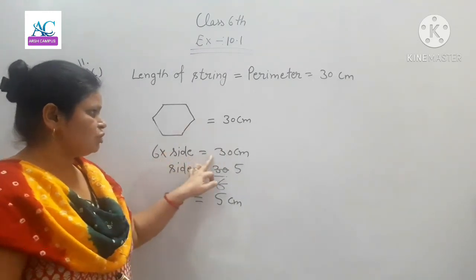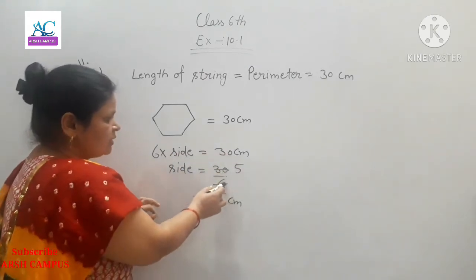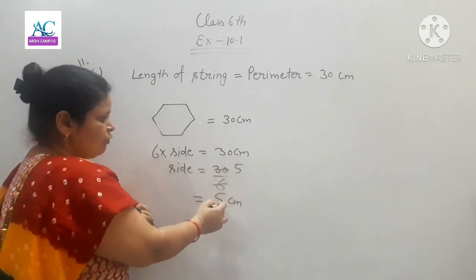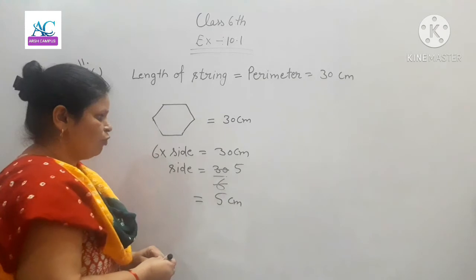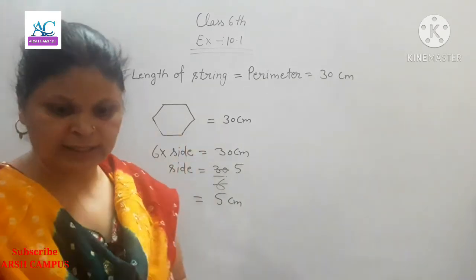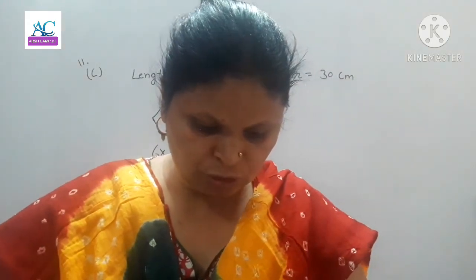6 × side = 30 centimeters. The side equals 30 ÷ 6. Dividing, 6 goes into 30 five times, so 5 centimeters is the side of the regular hexagon. This is how you solve Question 11.